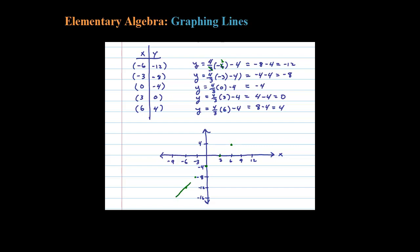Use a straight edge if you can when you connect the dots. Here's my line—sorry it's a little crooked. Like I said, you should use a straight edge. This is the line Y equals four-thirds X minus four.